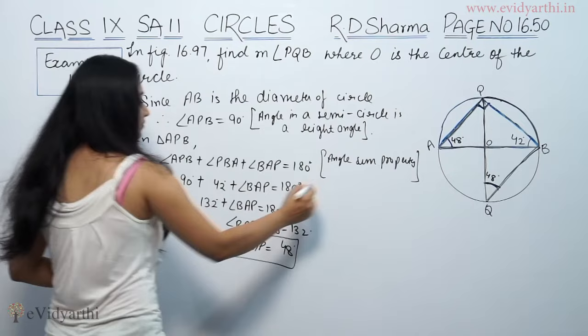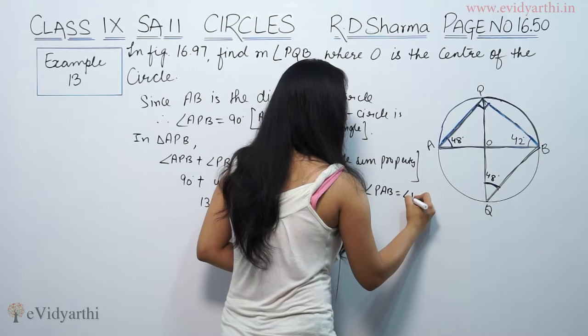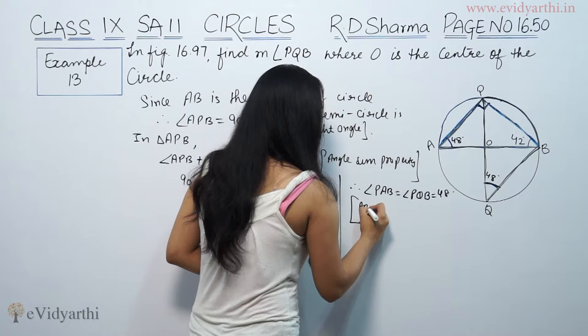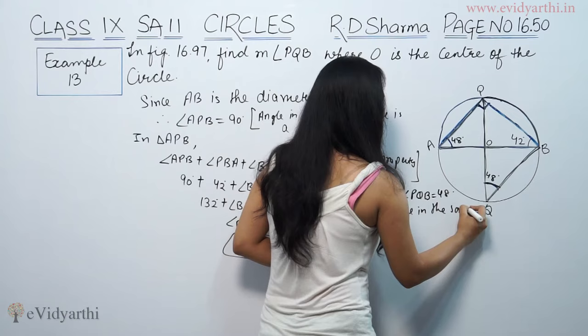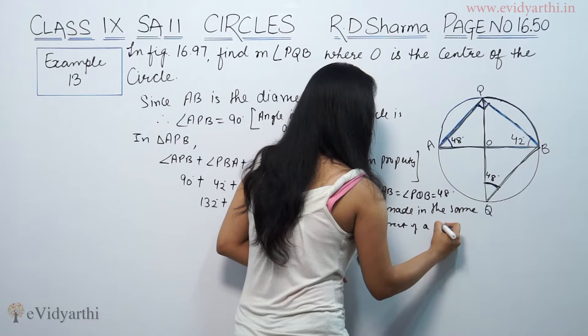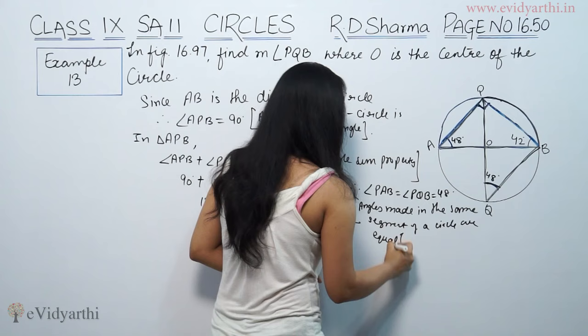So angle PAB equals angle PQB, which equals 48 degrees. This is because angles made in the same segment of a circle are equal.